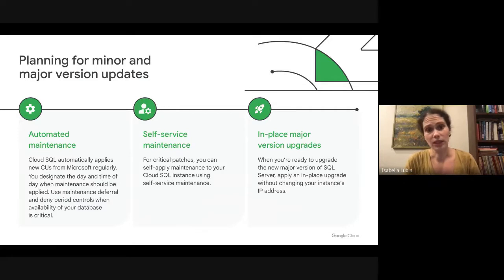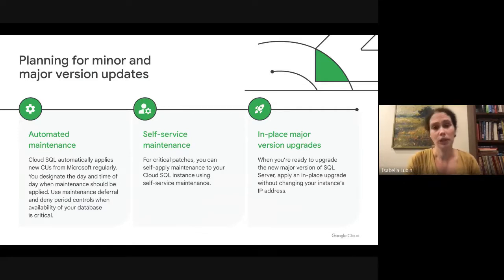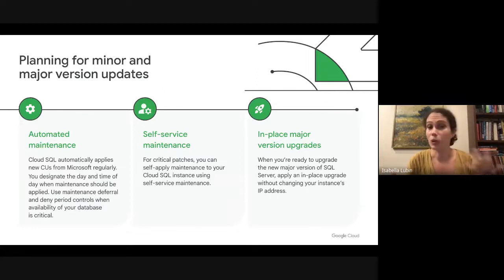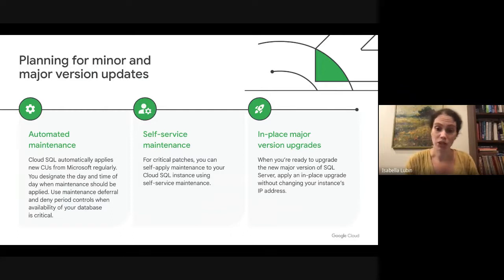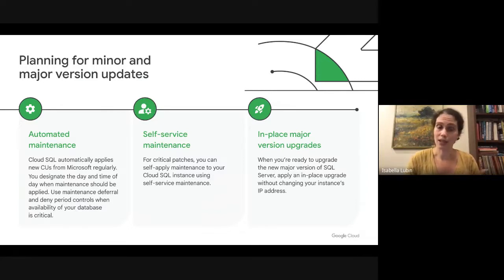A recent release allows you to take advantage of the newest version of SQL Server with in-place major version upgrades. When you're ready to upgrade — for example, from SQL Server 2017 to 2019 — you can apply an in-place major version upgrade without changing your instance's IP address. This functionality also allows you to upgrade the edition of your SQL Server instance, so if you want to upgrade from SQL Server Standard to SQL Server Enterprise, you can also perform that as an in-place upgrade.